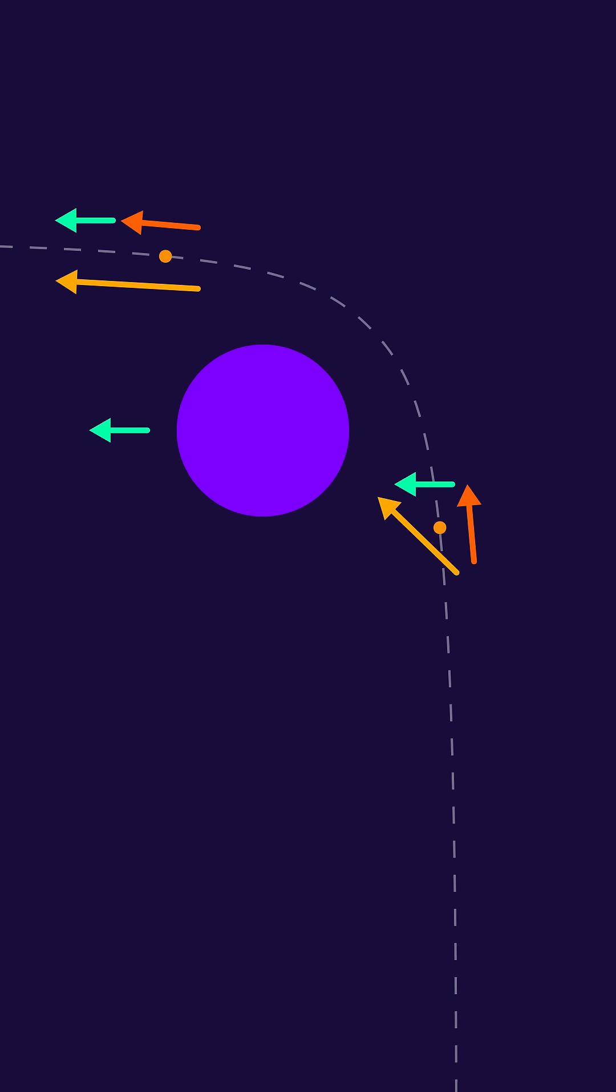When we now combine all those speeds we see what happens here. By bending our trajectory the arrows get aligned, forming a longer arrow which means a higher velocity. We are basically adding some of the planet's own speed to our spacecraft when doing a gravity assist.